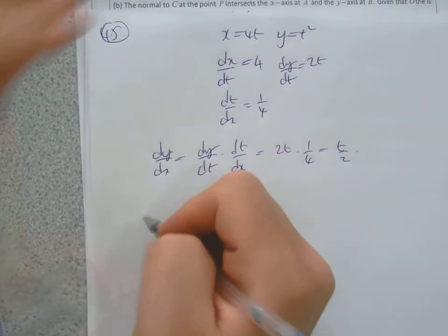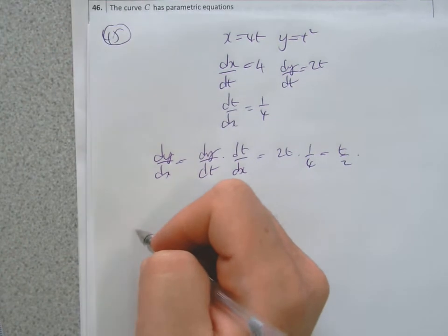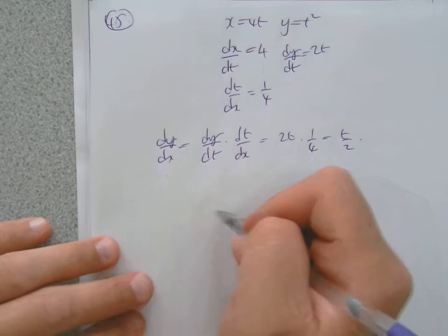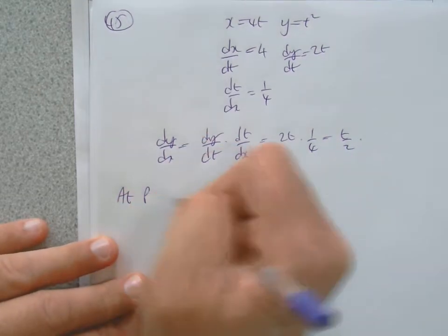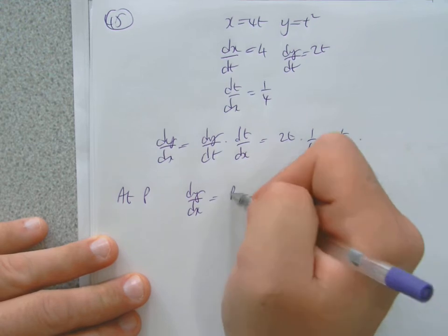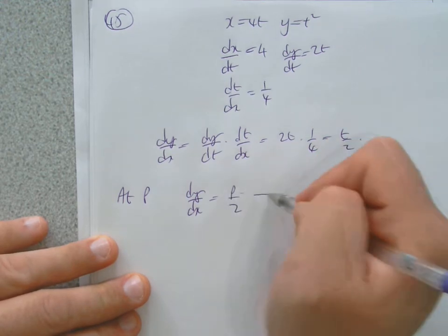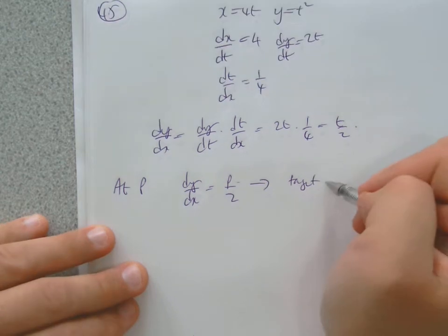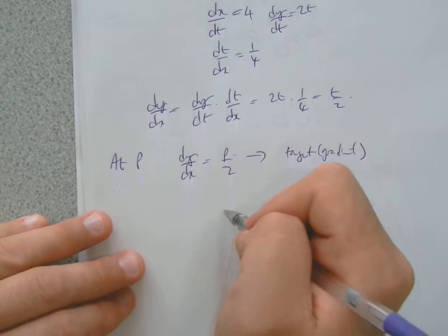That enables us to do part A, which says show the normal to C at the point P. At P, dy/dx will equal little p over 2. But that's the tangent, that's the gradient of the tangent. We want the normal.